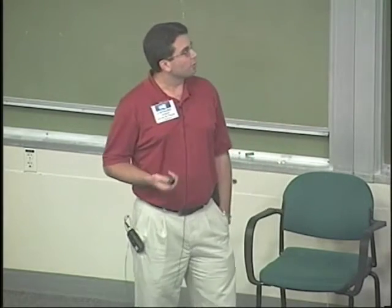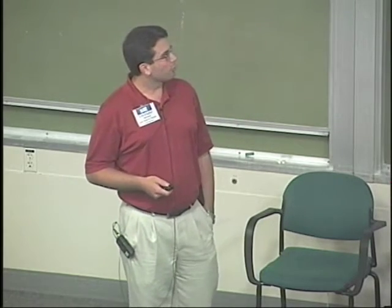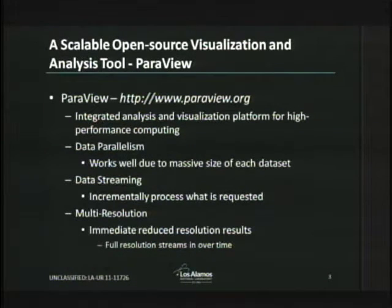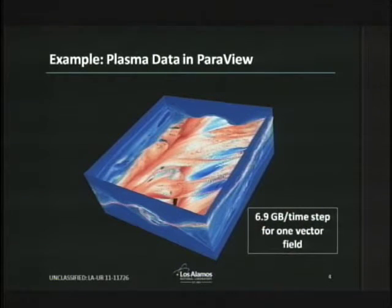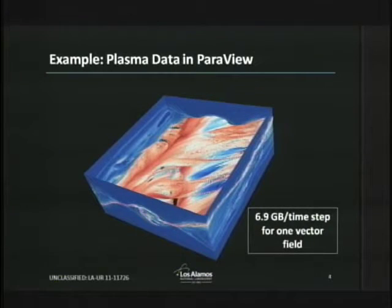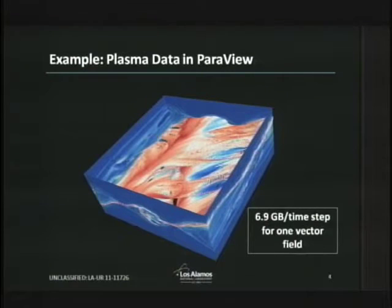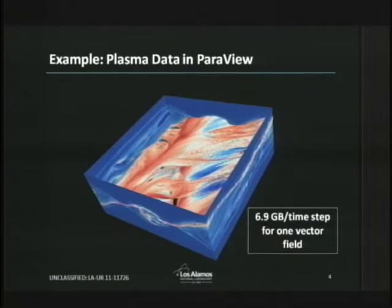ParaView provides data streaming and multi-resolution work where we can scroll through results immediately with a summary view, then fuller resolution pictures come in over time. For a plasma simulation looking at magnetic reconnection, one vector field for one time step totals 6.9 gigabytes. In a typical simulation run, it's not unheard of to have hundreds to thousands of time steps, multiple vector fields being saved, and a couple of scalar fields — the amount of data adds up very quickly.